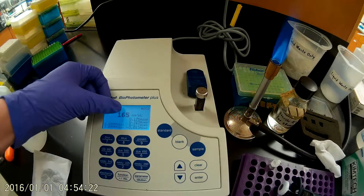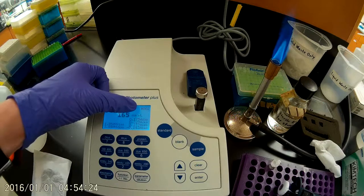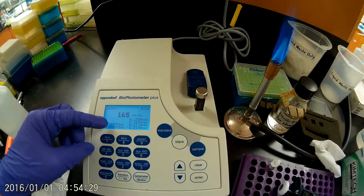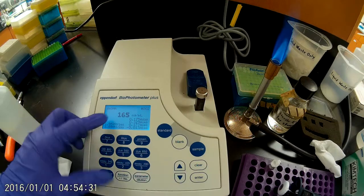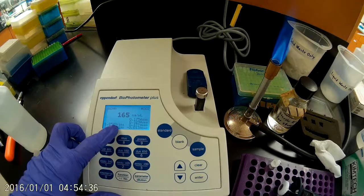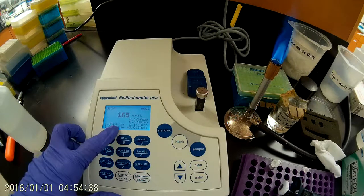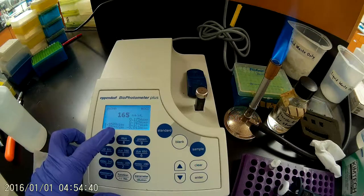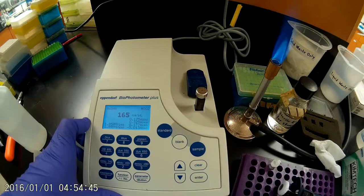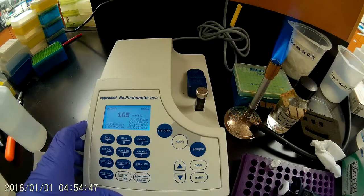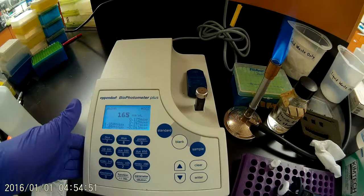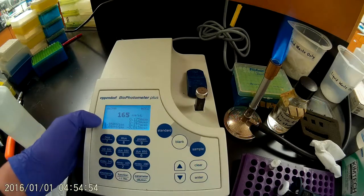Okay, so we see 165 nanograms per microliter. That's the concentration. As for our purity, we're really interested in this number here, 1.85 for the 260 over 280 reading. So that 260 over 280 is the ratio of the absorbance at 260 nanometers to the absorbance at 280 nanometers. For pure DNA, you expect a 260 over 280 of about 1.8. Pure RNA, you expect a 260 over 280 of about 2.0. Values lower than 1.8 typically indicate protein contamination. So this 1.85 is pretty good.